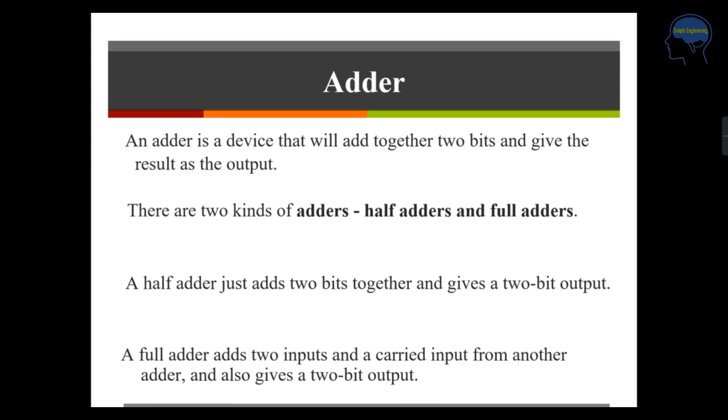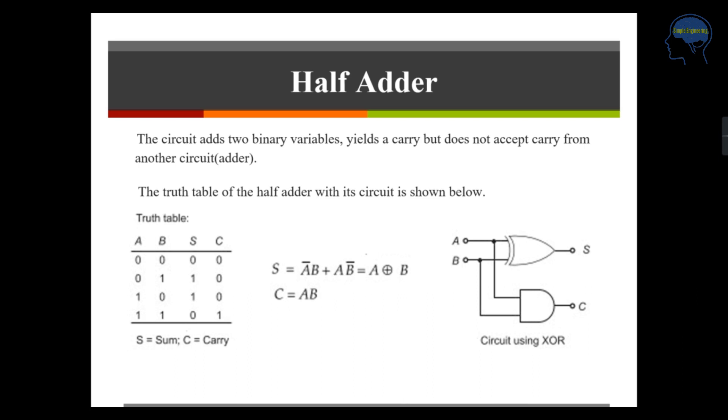In half adder, it will add 2 bits together and it will give a 2 bit output. For a full adder, it adds 2 inputs and a carried input from another adder and it gives a 2 bit output. Let's see what is a half adder.